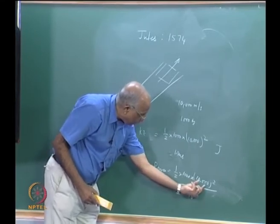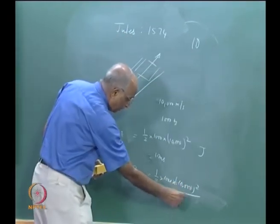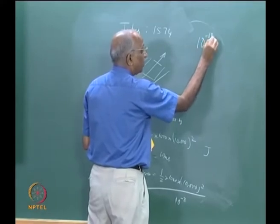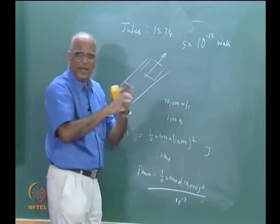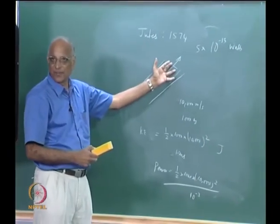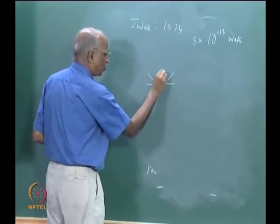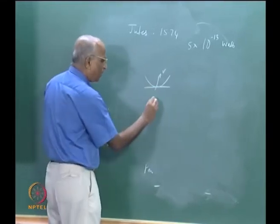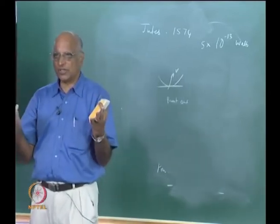That is a huge number - even the entire electricity generated in a super thermal power plant is much lower than this. Therefore we cannot use a cannon launch like this. Also, if by chance I get a high velocity, when the body travels at high velocity through the atmosphere, it will get burnt out because of frictional resistance of the air. Therefore we need some other type of propulsion, and when we say rocket propulsion, all what we mean is you have a continuous ejection of mass at high velocities.